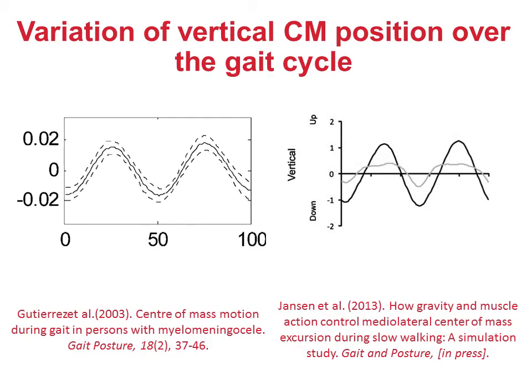A lot of gait analysts need some convincing at this point. So let's look at two studies that have quantified vertical centre of mass position throughout the gait cycle. You can see that in both studies the centre of mass is at its lowest, or very close to its lowest, at initial contact. Vertical deceleration has been achieved before initial contact by the action of the trailing limb.